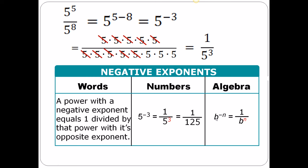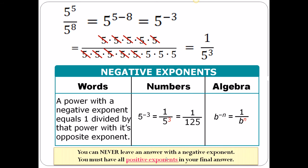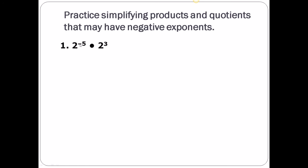In general with algebra, b to the negative n power means you just take the reciprocal — 1 over b — and make your power positive. And you must read this rule: you can never leave an answer with a negative exponent. Ever. You must always have a positive exponent in your final answer. If you see any negative exponents, you're not done.